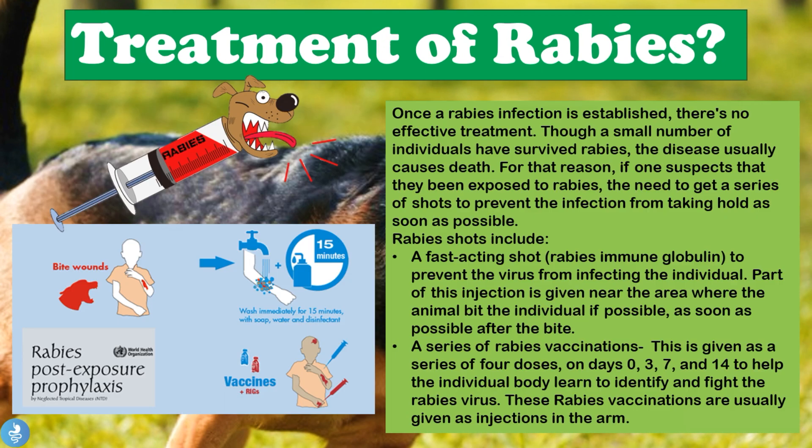Once a rabies infection is established, there is no effective treatment. Though a small number of individuals have survived rabies, the disease usually causes death. For that reason, if one suspects they have been exposed to rabies, they need to get a series of shots to prevent the infection from taking hold as soon as possible.